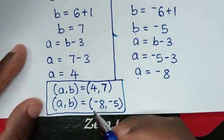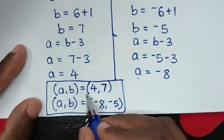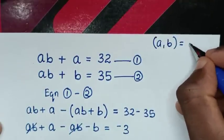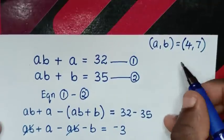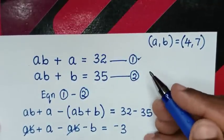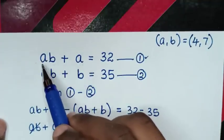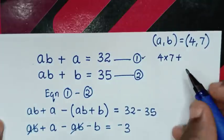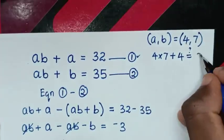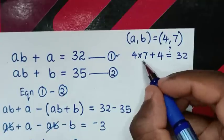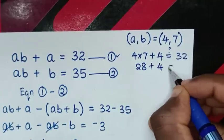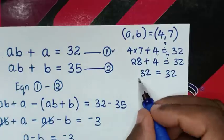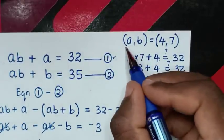To check if these solutions are correct: from the first solution, A comma B equals 4 comma 7. Substituting into the first equation, A times B plus A equals 4 times 7 plus 4. That gives 28 plus 4, which equals 32. The left side and right side are equal, so the first solution is correct.